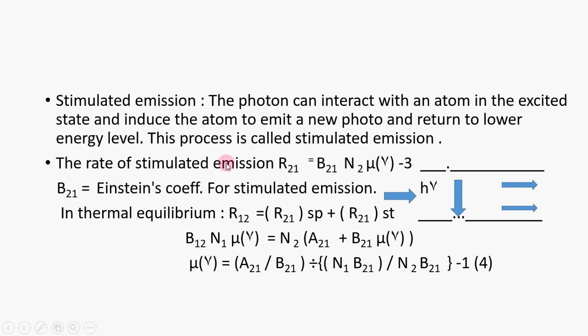The rate of stimulated emission R21 is equal to B21 N2 μ(ν). B21 is Einstein's coefficient for stimulated emission and now in thermal equilibrium, here at normal temperature, rate of absorption equals rate of emissions. In thermal equilibrium: R12 = (R21)sp + (R21)st. B12 N1 μ(ν) = N2(A21 + B21 μ(ν)). μ(ν) = (A21 / B21) ÷ ((N1 B21) / N2 B21) - 1 equation 4.